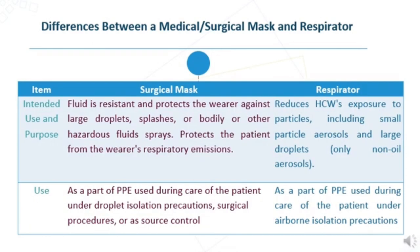This slide discusses the differences between a medical surgical mask and a respirator. For the surgical mask, the intended use and purpose: it is fluid resistant and protects the wearer against large droplets, splashes, or hazardous fluid sprays. It also protects the patient from the wearer's respiratory emissions. It is used as part of PPE during care of patients under droplet isolation precautions, during surgical procedures, or as a source control by instructing an infected patient to wear it.